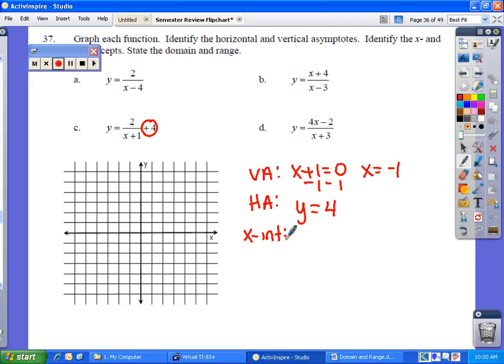X intercept, we're going to hold off on that for a second because it requires a lot of work. But the y intercept, you're just going to replace zero in for your x's. So it would be two over zero plus one plus four.